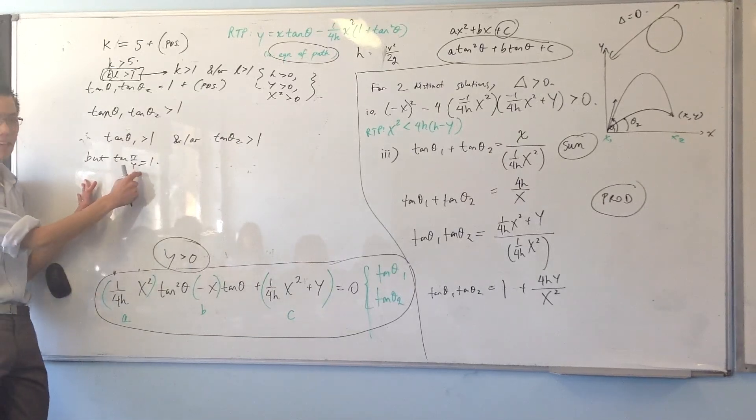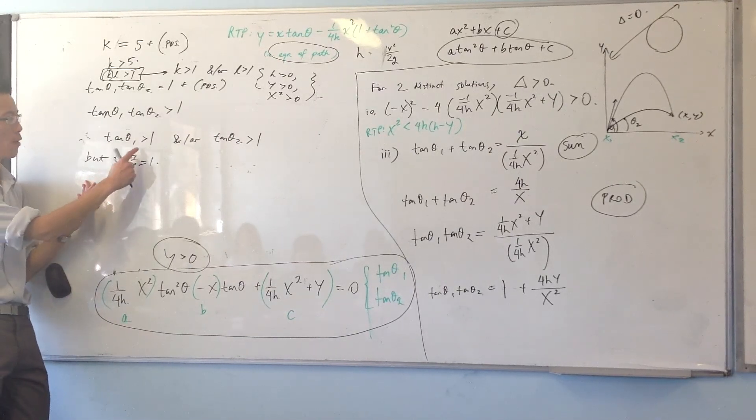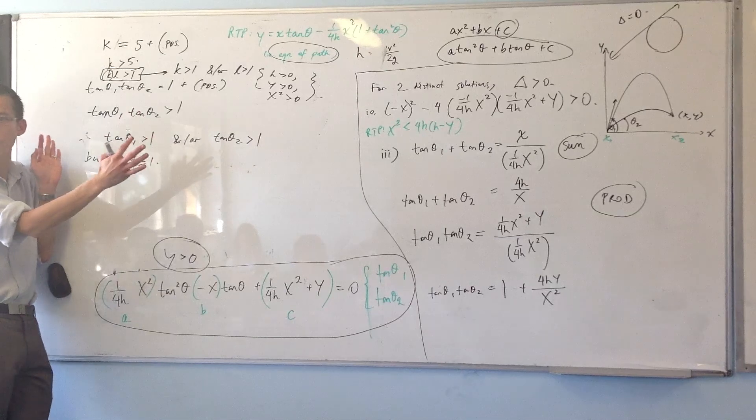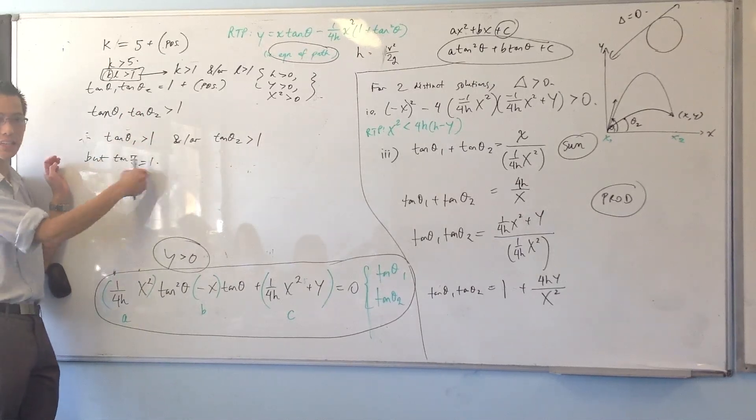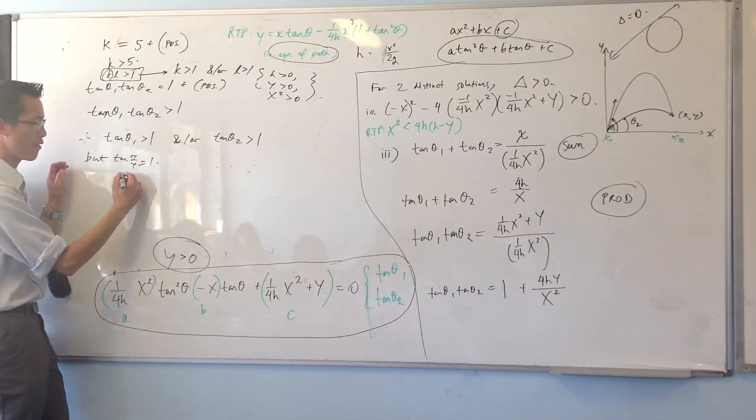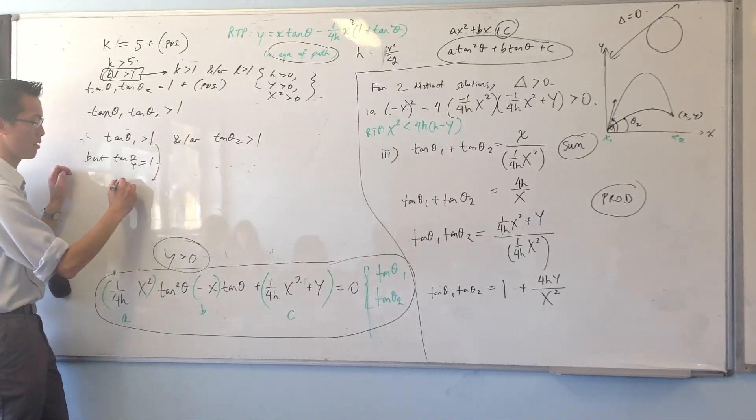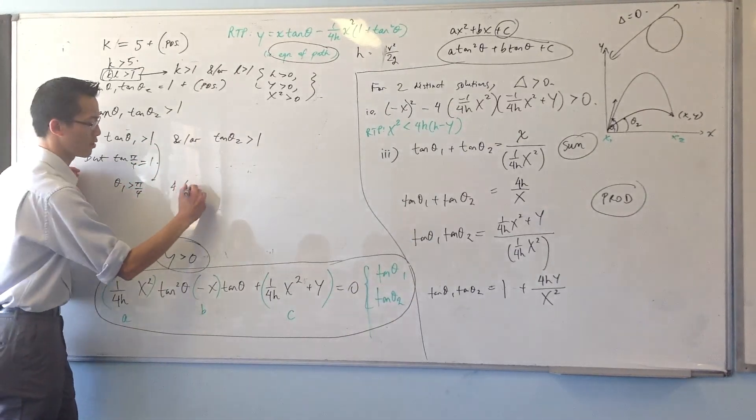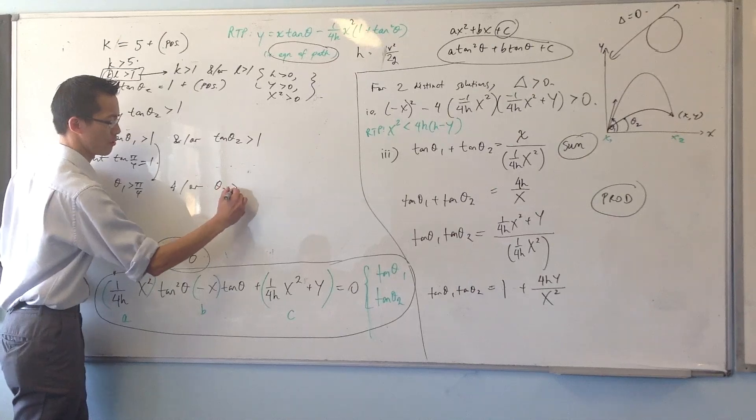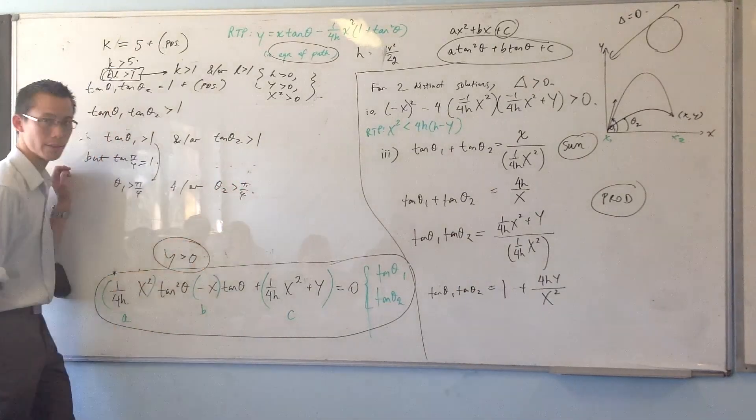So this is kind of like my boundary value, right? If I want these two or one of them at least to be true, then I have to get past here, right? So therefore I can go from this: theta 1 must be greater than pi on 4 and or theta 2 must also be greater than 4.